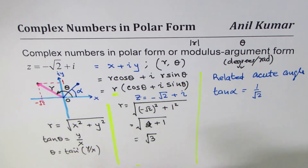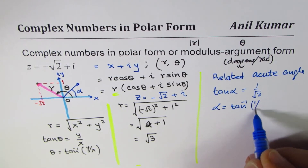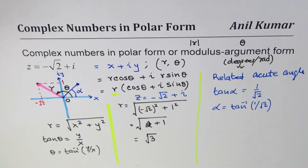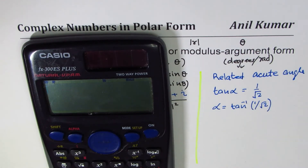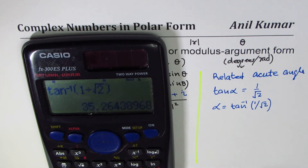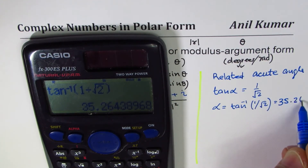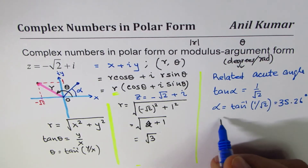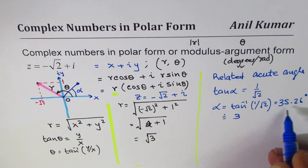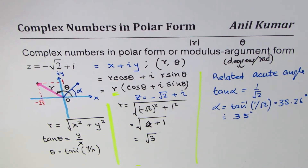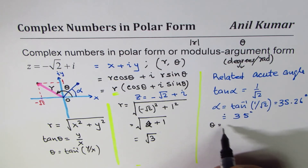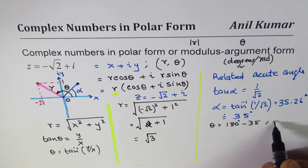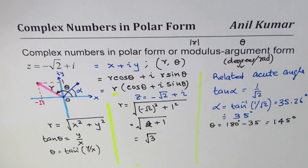This angle is alpha, so alpha equals tan inverse of 1 over square root 2. Don't confuse this with 45 degrees — tan is 1 for 45 degrees. Using the calculator: shift, tan inverse, 1 divided by square root 2, close brackets. This gives alpha equal to 35.26 degrees. We'll round to 35 degrees. Now, since alpha is 35 degrees and we are in quadrant 2, theta equals 180 minus 35, which is 145 degrees.